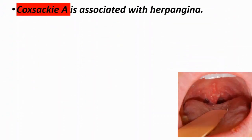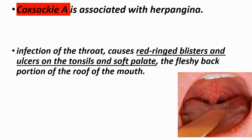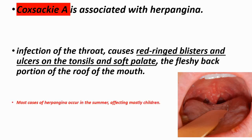Another condition is herpangina. Herpangina is an infection of the throat characterized by red-ringed blisters and ulcers on the tonsils and soft palate — the fleshy back portion of the roof of the mouth. This is a common location for this type of lesion. Most cases of herpangina occur in the summer, affecting mostly children.